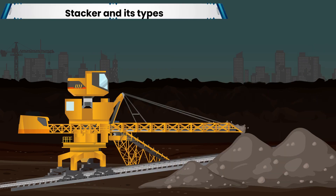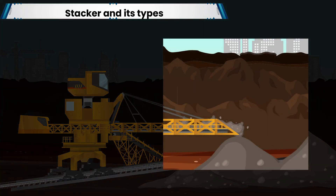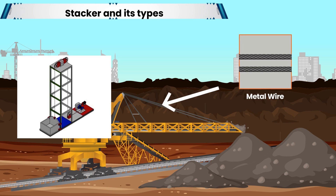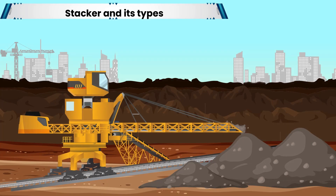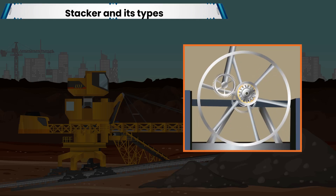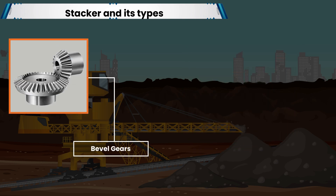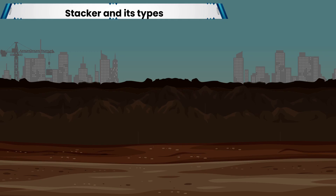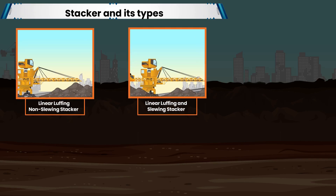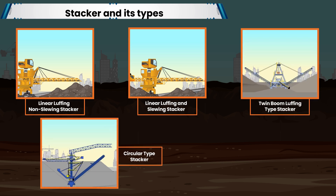Stackers are large pieces of equipment designed to extend across the width of a stockpile and deposit products over the length of the stockyard. They have three types of movement: luffing — vertical movement using either a winch mechanism with metal wire or hydraulic cylinders; travelling — the stacker moves on a rail track enabling it to move around the stockyard as required; and slewing — rotation of the stacker around its central axis to align or place the stockpile where required. This type of gear assembly is called a sun and planet gear arrangement consisting of bevel or helical gears. The categories of stackers are: linear luffing non-slewing stacker, linear luffing and slewing stacker, twin boom luffing type stacker, circular type stacker, and bucket wheel type.